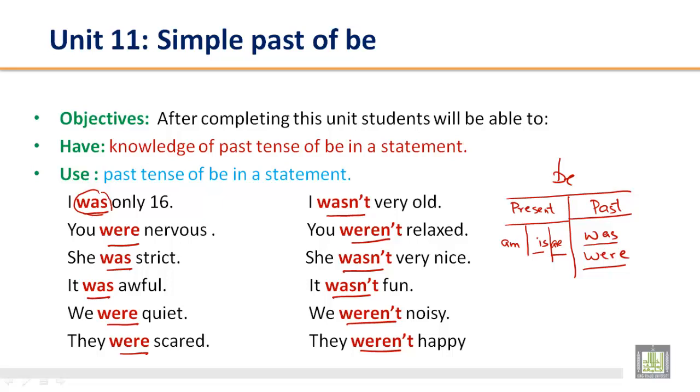So you can see all this - with singular we use was. I was only 16. In negative, I wasn't very old. We make negative by adding was plus not, and the contraction is wasn't.